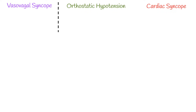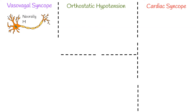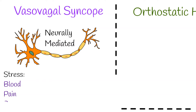Causes of syncope can be categorized into three main categories: vasovagal syncope, orthostatic hypotension, and cardiac syncope. Vasovagal syncope, also called neurally mediated or reflex syncope, occurs when blood vessels expand and heart rate decreases inappropriately. This can happen during stress-related situations, with triggers including exposure to blood, pain, and strong feelings.